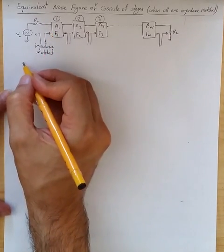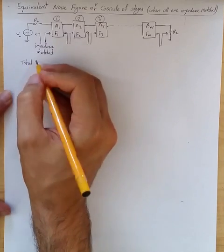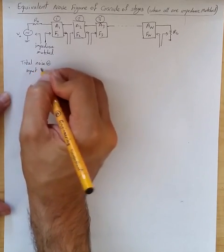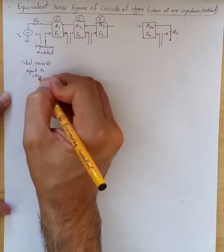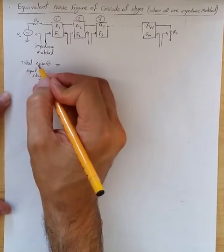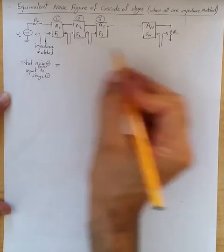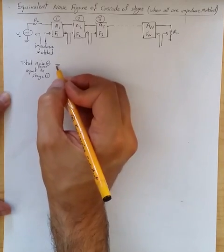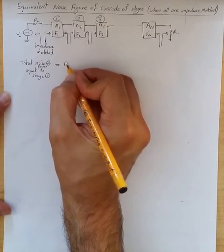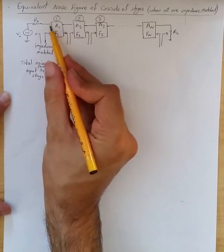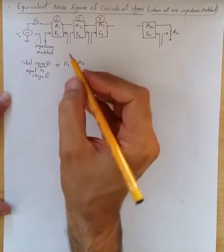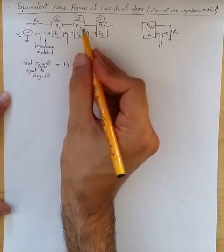It is equal to the sum of the total noise power. Because these noises are independent from each other, we can just simply add them up in power. So it would be N1, which is the noise power of stage 1 input referred at the input of the stage, then N2, which is the noise power of the noise for stage 2, referred to the input of stage 1.